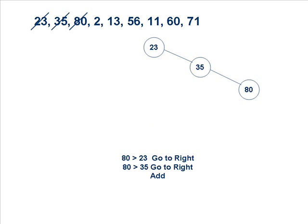Next is 80. We compare 80 with 23 — it is larger, so we move to the right hand side. We find another node already placed there, so we further compare it with 35. It is still larger than 35, so we move it further right of 35 and place it there as you can see in the video.